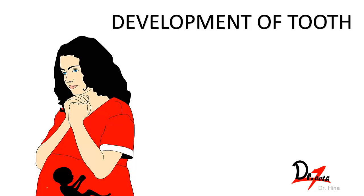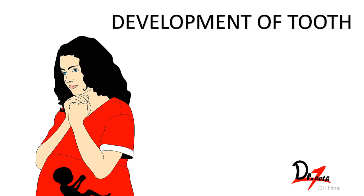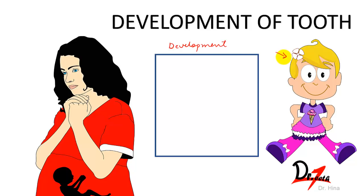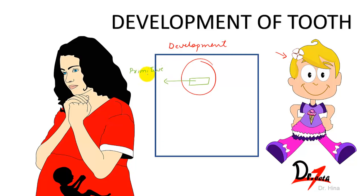So imagine yourself developing in your mother's womb. This box represents the phase of development, and eventually you will form a cute baby. This developing mouth is called the primitive oral cavity — it is still developing — or it is also called the stomodium.